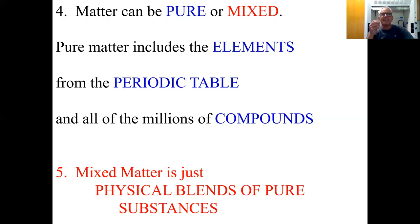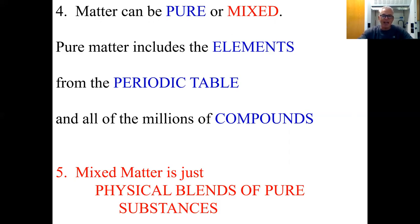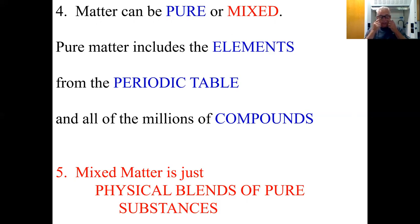My water and your water are exactly the same physically and chemically. My sodium chloride and yours are exactly the same. The stuff you put in the pool to kill germs that people casually call chlorine is actually sodium hypochlorite — NaClO — three atoms bonded together: sodium, chlorine, and oxygen in a one-to-one-to-one ratio. My sodium hypochlorite is the same as yours. Those are pure substances. Mixtures, on the other hand, are just mixtures.